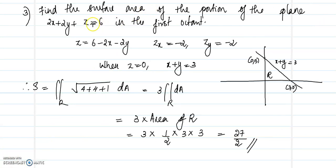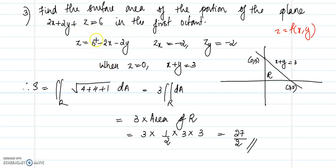The third problem is to find the surface area of the portion of the plane 2x + 2y + z = 6 in the first octant. Writing it as z = 6 − 2x − 2y, we find ∂z/∂x = −2 and ∂z/∂y = −2. The surface lies in the first octant, bounded by the coordinate planes, and intersects the xy-plane (z = 0) along the line x + y = 3.